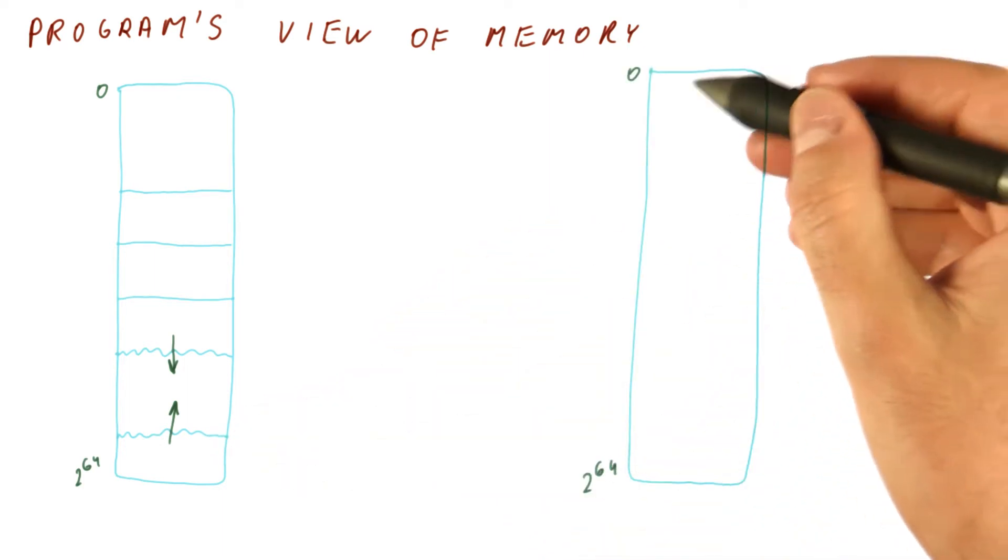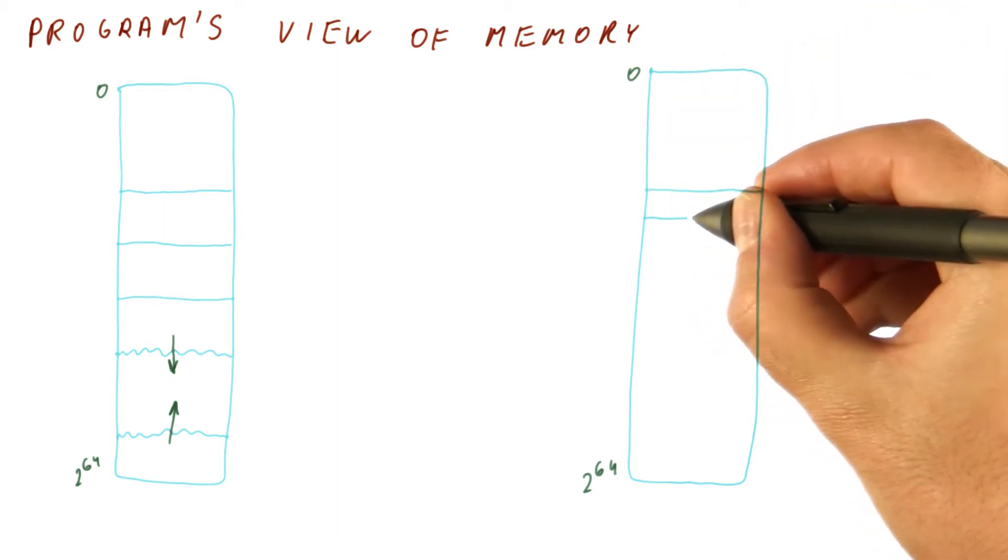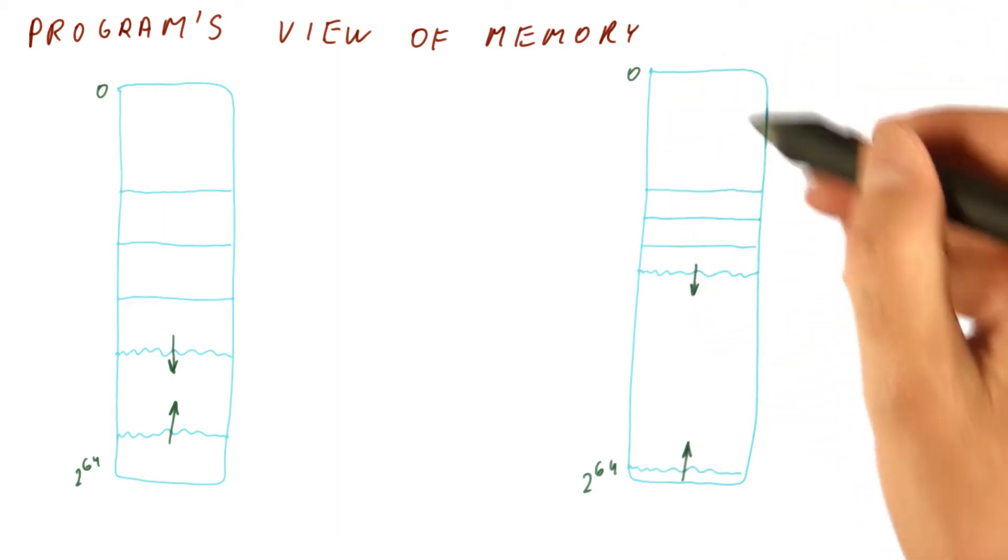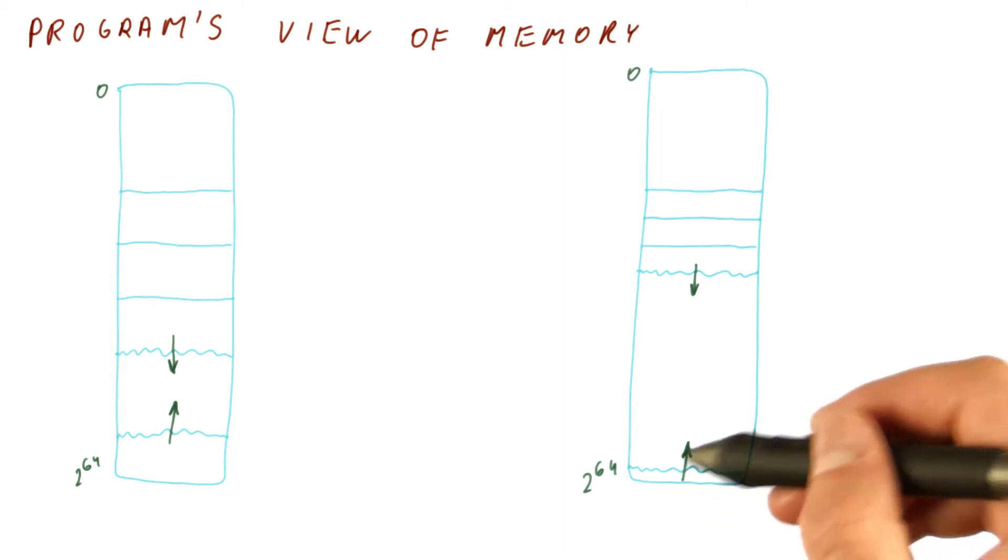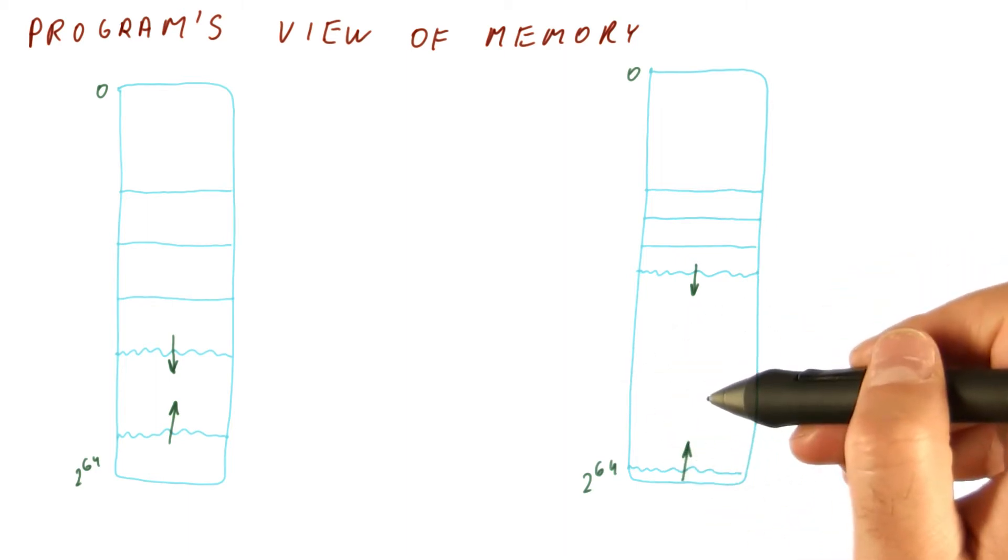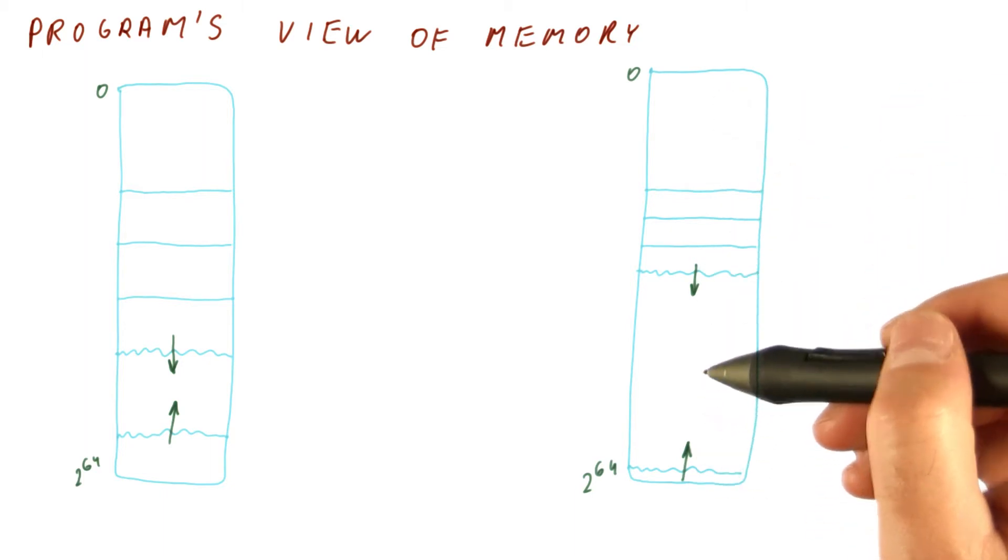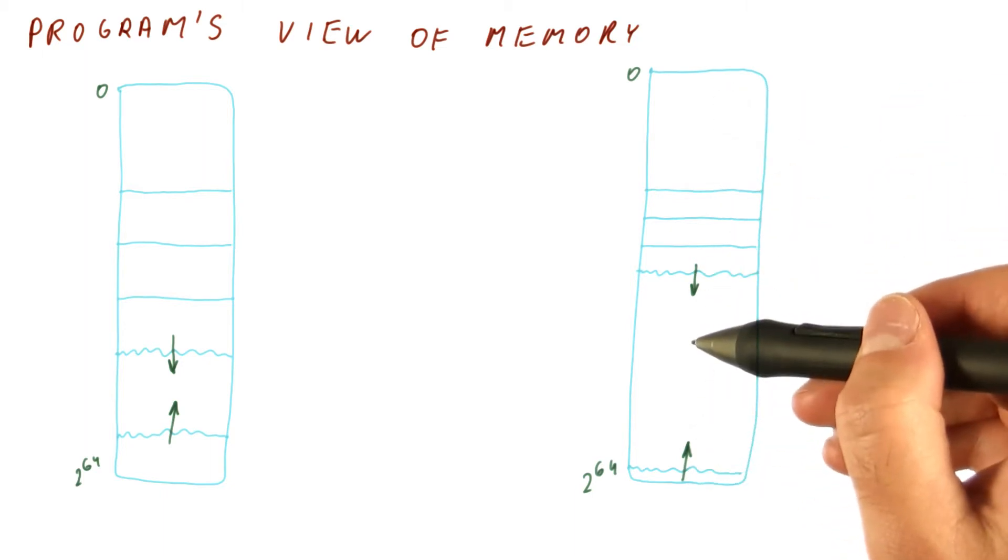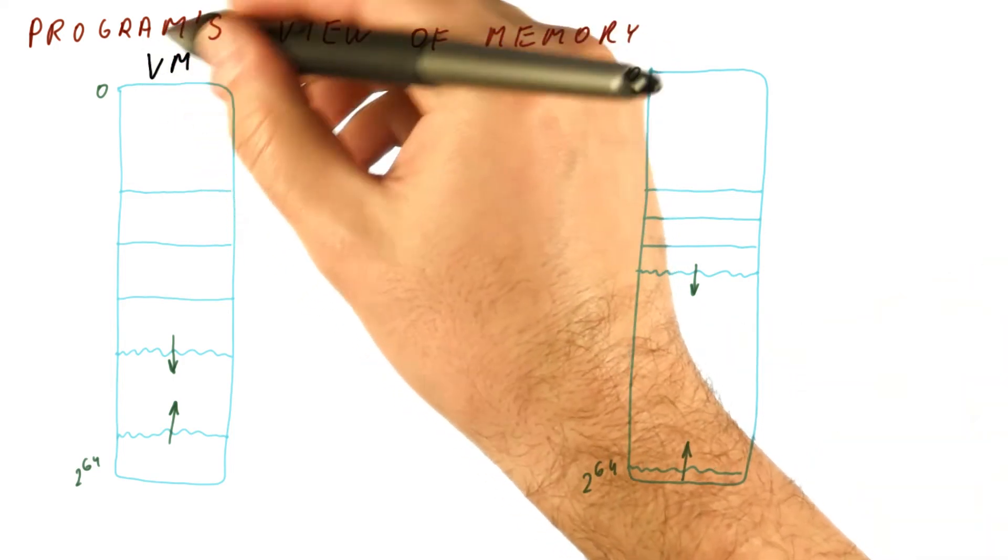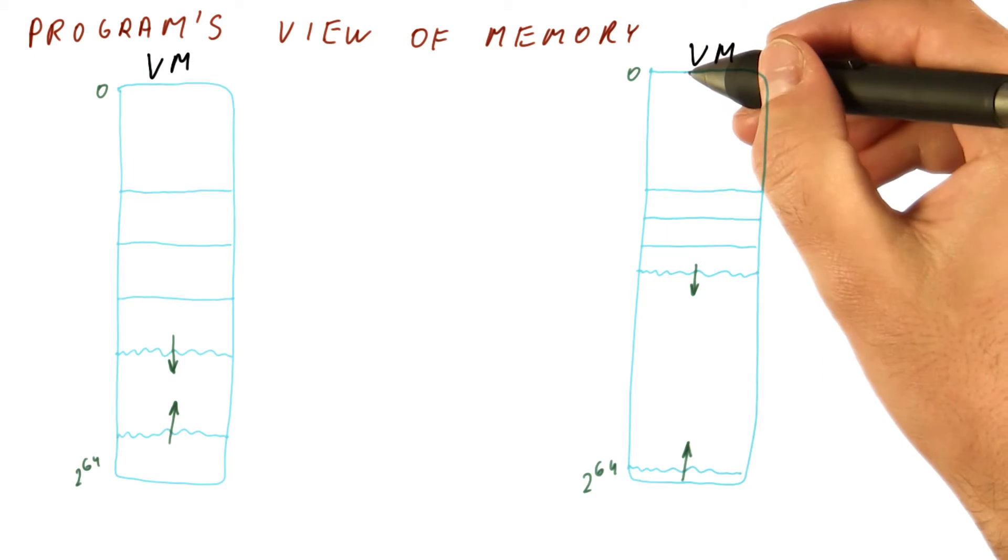Another program has its own virtual memory. Let's say it's a small program, so it's using less memory and less for the stack. So it has more memory here that it's not really using. But the idea that the program has about this memory is that it can always use more. So this is the virtual memory of one program. This is the virtual memory of another program.